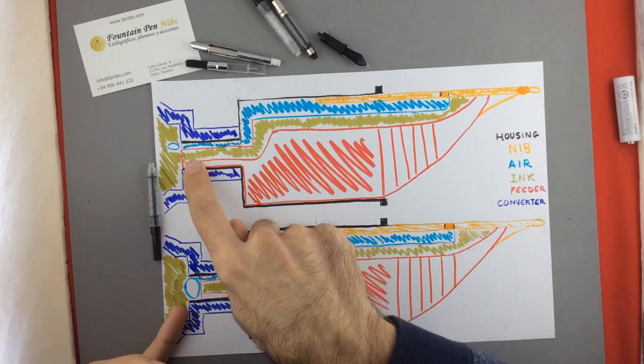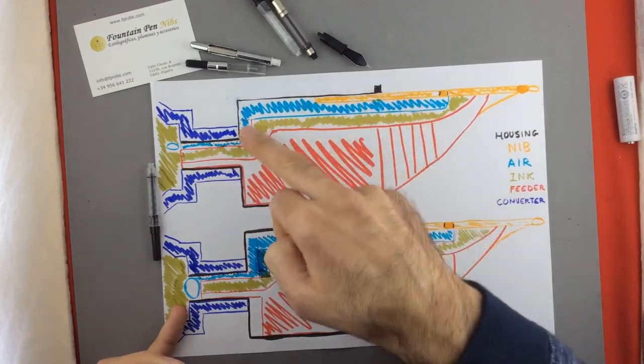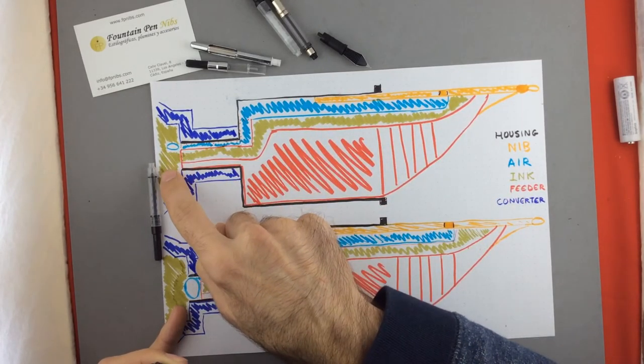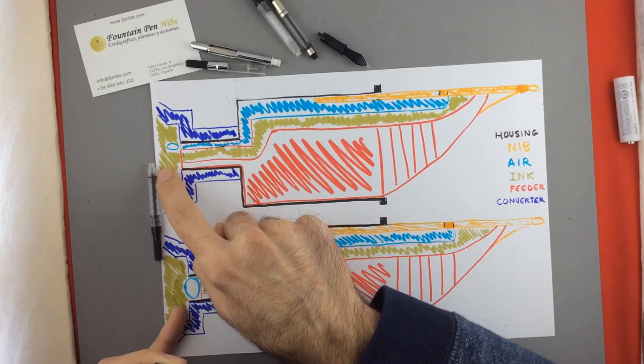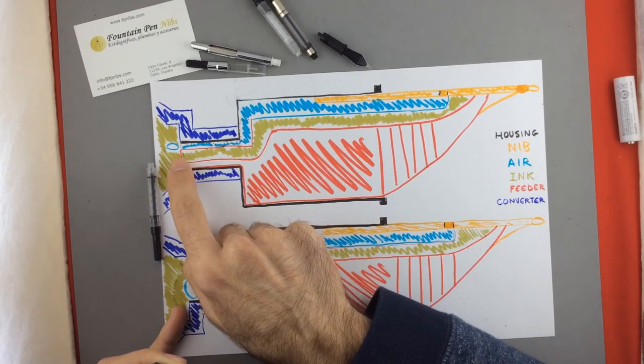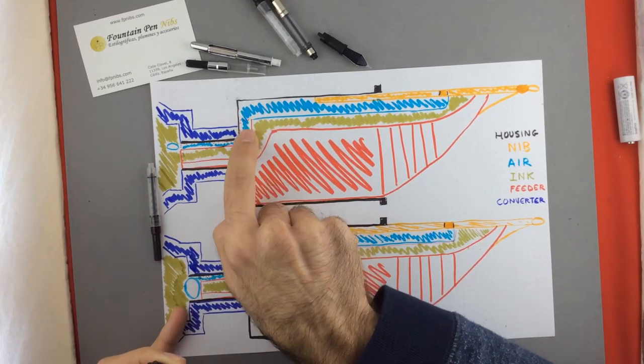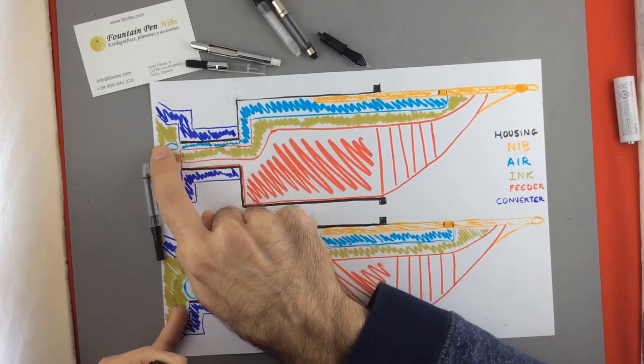In here we have the feeder all the way into the section. So the ink in the reservoir touches the ink channel from the feeder and the air can go into the reservoir freely.